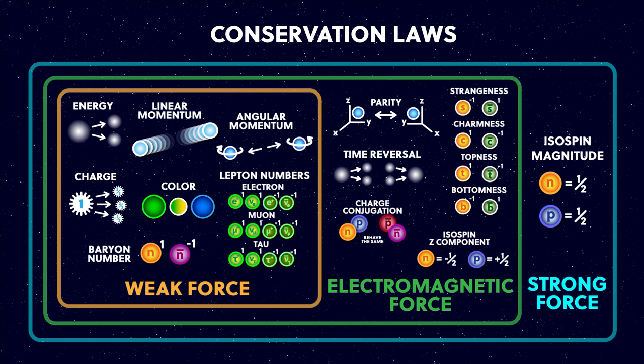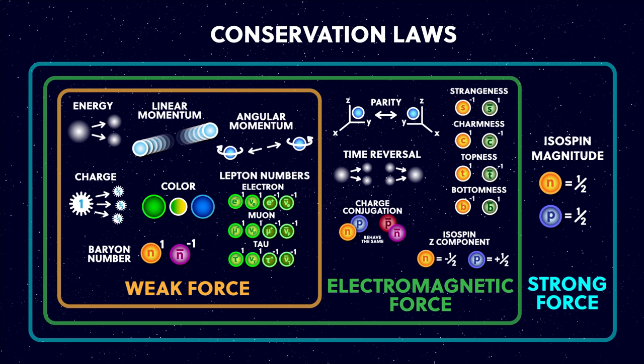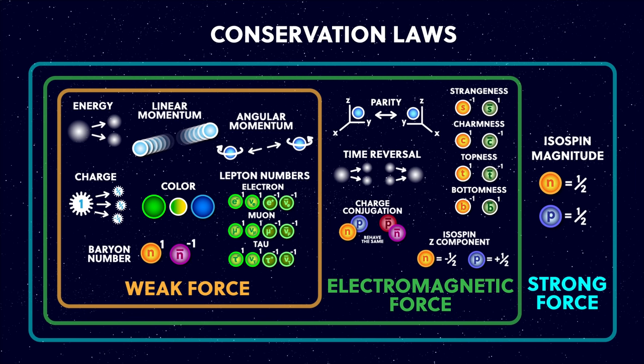I mentioned time reversal earlier — it basically says the laws of physics look exactly the same if we flip the arrow of time and run it backwards. Interestingly, this is actually equivalent to CP symmetry, and this isn't conserved by the weak force but it is by the others. Finally we have isospin z component and isospin magnitude, which are quantum numbers to do with the up and down quarks — I'll be honest I don't understand these well enough to do a concise summary here, but I've included them for completeness so at least now you know that they exist.